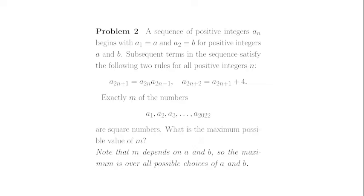Subsequent terms in the sequence satisfy the following two rules for all positive integers n: a_{2n+1} equals a_{2n} times a_{2n-1}, and a_{2n+2} equals a_{2n+1} plus 4.